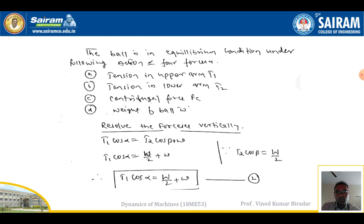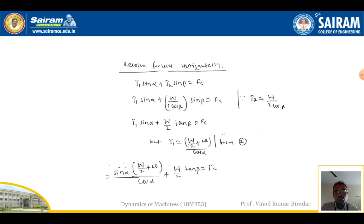The ball is in equilibrium under four forces: tension T1 in the upper arm, tension T2 in the lower arm, the centrifugal force Fc, and the weight of the ball w. Resolving forces vertically: T1·cosα = T2·cosβ + w. Substituting T2 = W/(2·cosβ), we get T1·cosα = W/2 + w. This is Equation 2.